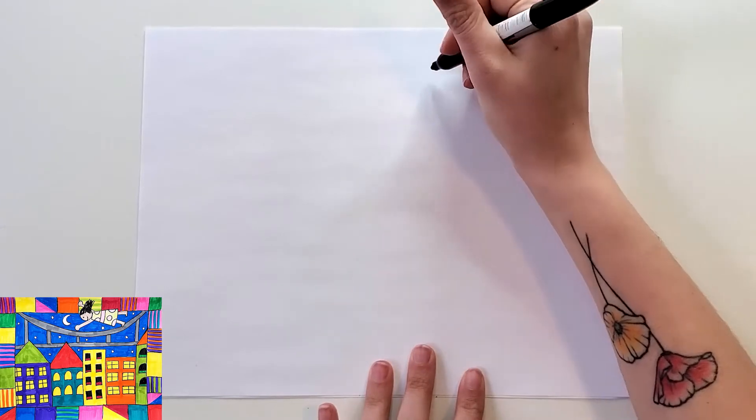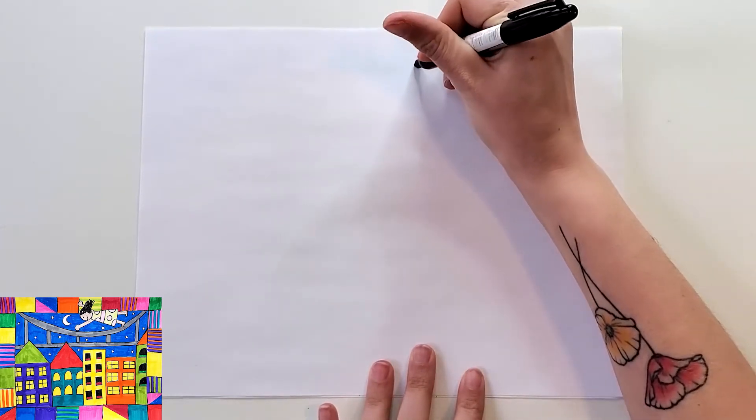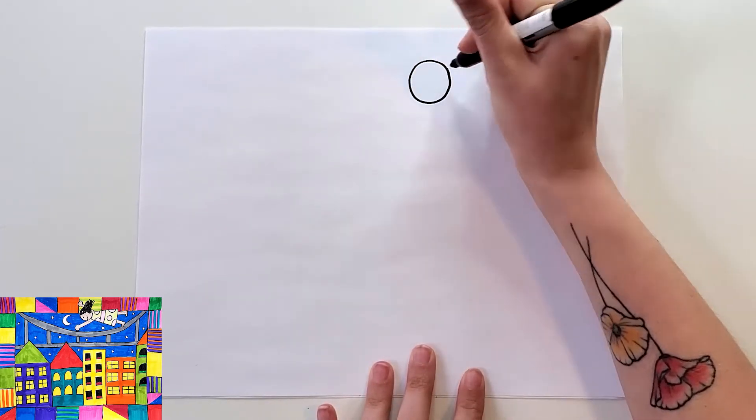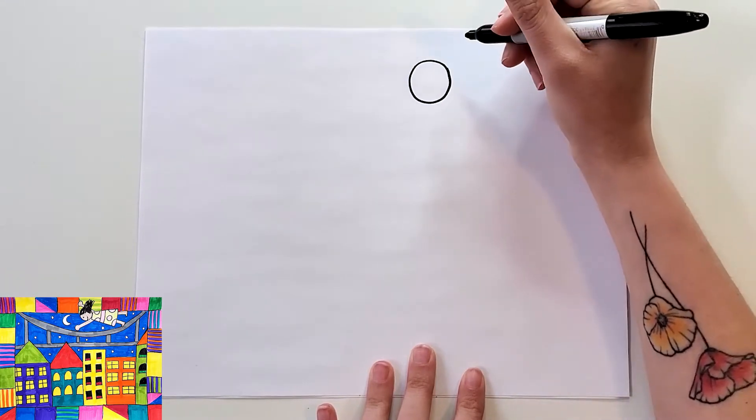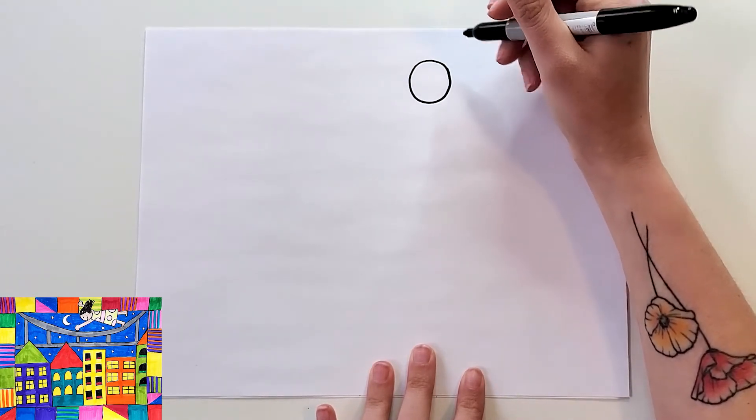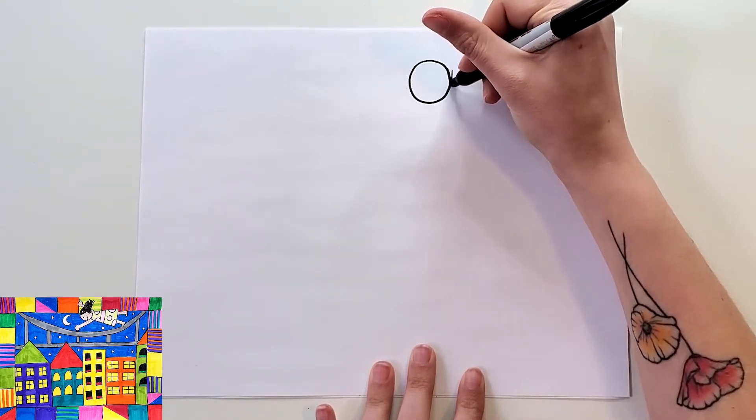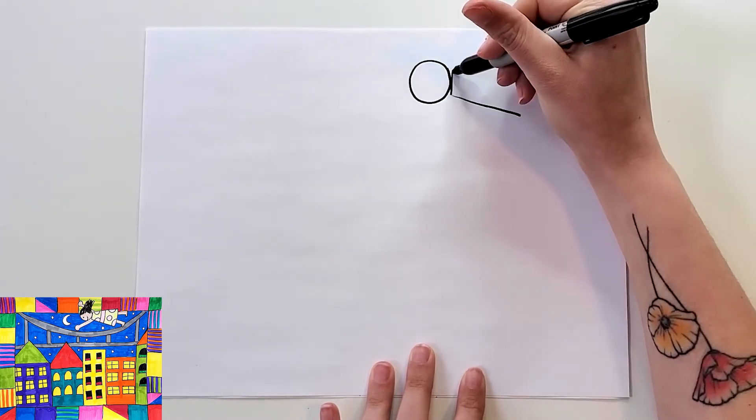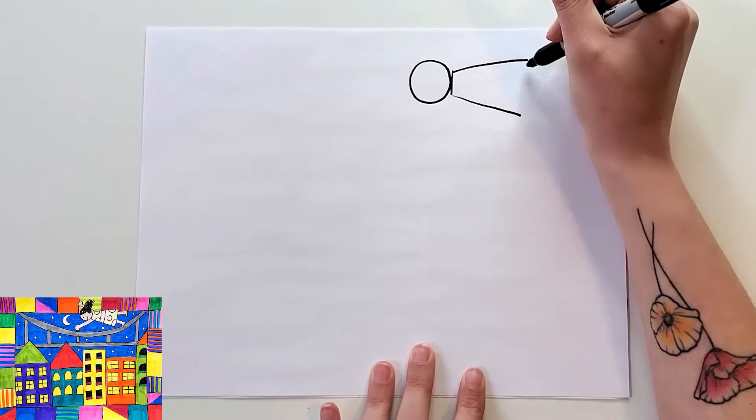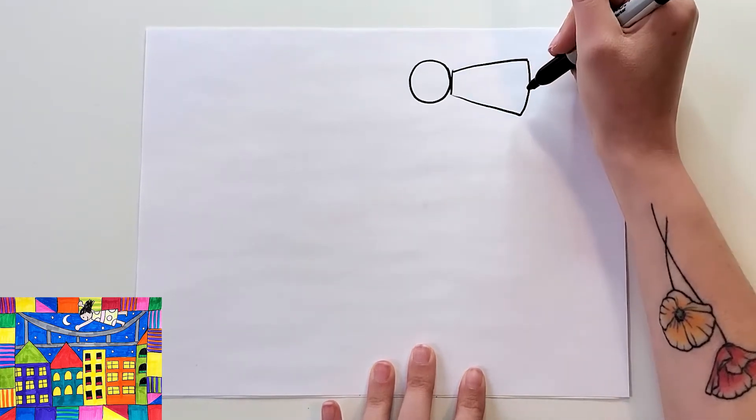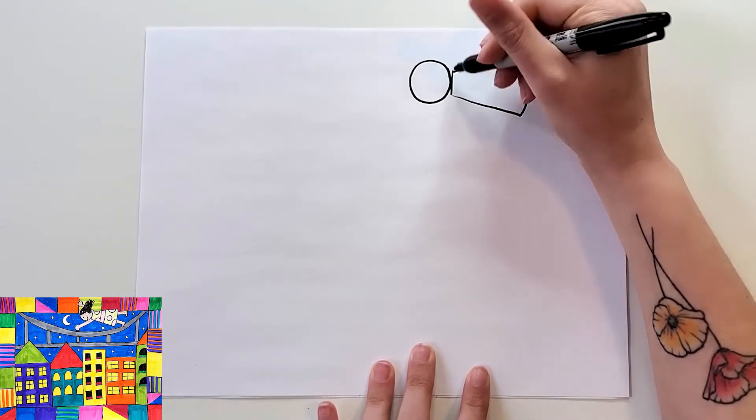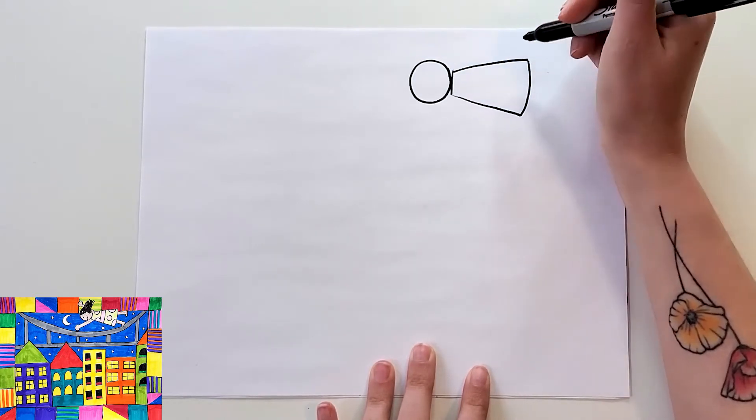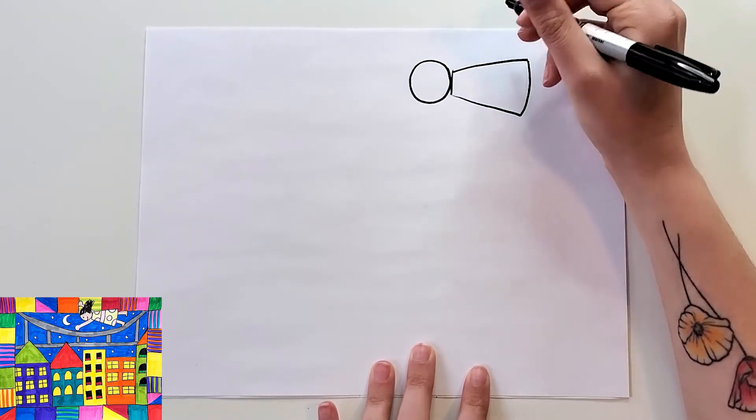Up near the top, you're going to start with a circle for the head. Then for the body, I am going to do a shape kind of like a dress. I'm going to do a straight line, two angled lines like this, and then a curved line. Now if you wanted to do pants instead, you could do a small rectangle and then two rectangles for the pant legs, but I did it like this.